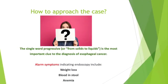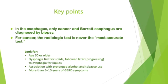Now let's get back to our case. The single word 'progressive' — or progression from solids to liquids — is the most important clue to the diagnosis of esophageal cancer, as well as the age of the patient. Red flags indicating endoscopy include weight loss, blood in stool, and anemia. Key points: in the esophagus, only cancer and Barrett's esophagus are diagnosed by biopsy. Radiology is never the most accurate test for cancer. Look for age 50 or older, progressive dysphagia, prolonged alcohol and tobacco use, and more than 5 to 10 years of GERD symptoms.